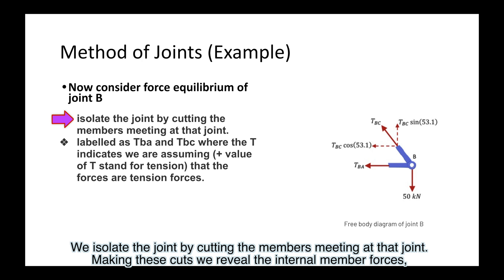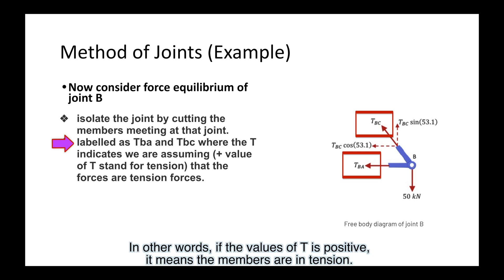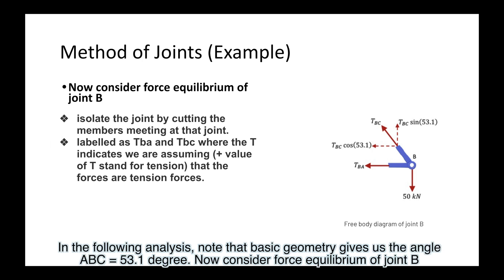We isolate the joint by cutting the members meeting at that joint. Making these cuts, we reveal the internal member forces, labeled as TBA and TBC, where the T indicates we are assuming that the forces are tension forces. In other words, if the value of T is positive, it means the members are in tension. In the following analysis, note that basic geometry gives us the angle of BC equals 53.1 degrees. Now consider force equilibrium of joint B.